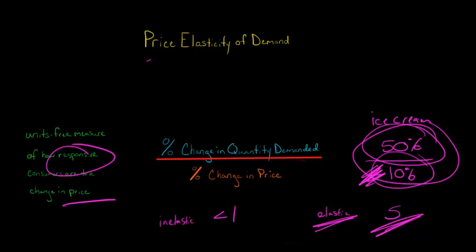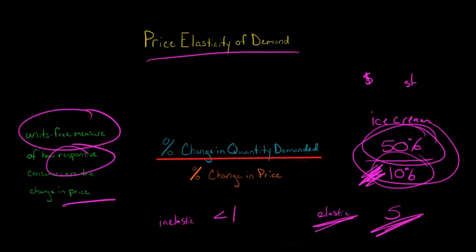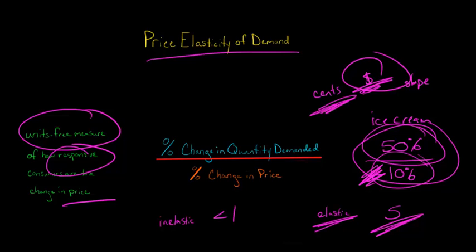The nice thing about price elasticity of demand is that it's a units-free measure. If ice cream was measured in dollars and you tried to think about slope, changing to cents would change the slope. We don't want issues of what unit something was measured in or how comparable it is. This is not slope — it's not measured in any unit. We just take the ratio of two percentages, and that tells us how elastic the demand is for a good.